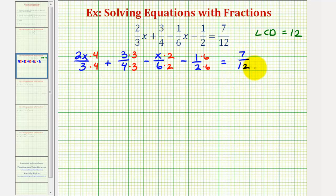Notice how the denominators are already 12. Now going back over to the first fraction, notice how we have 2 times 4 times x. That's going to be 8x over 12. Plus 3 times 3 is 9, so we have 9/12. Minus x times 2, that's 2x over 12. Minus, this would be 6 over 12, equals 7/12.